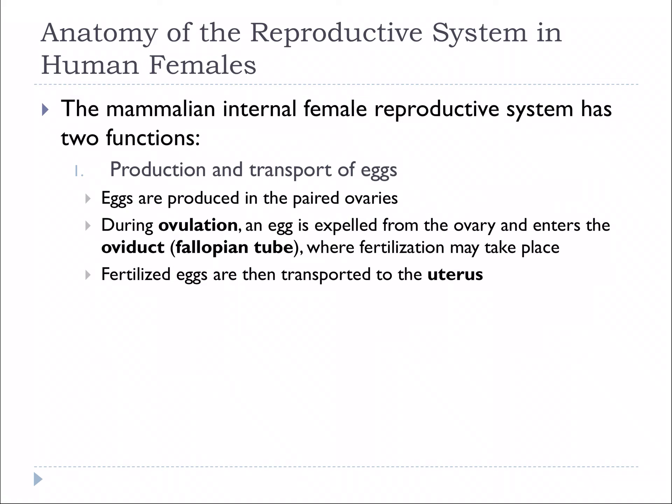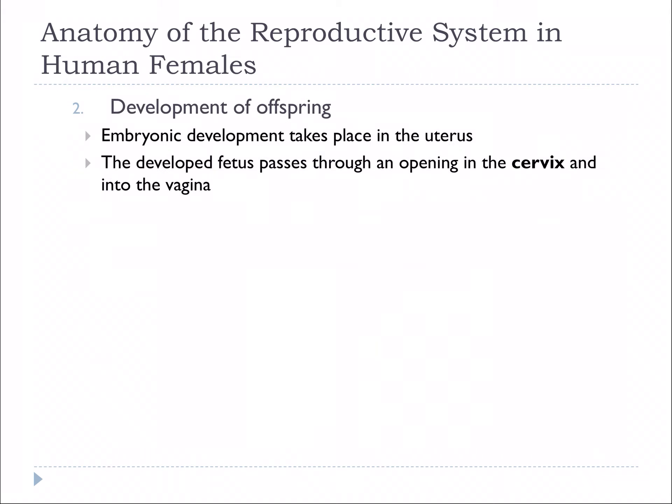From there, the eggs are transported to the uterus where they're implanted in the uterine wall, and the embryo will grow into a developing baby. When the fetus has reached the end of development, the inferior portion of the uterus, called the cervix, will dilate and open, and the fetus will pass through the vagina and out into the world.